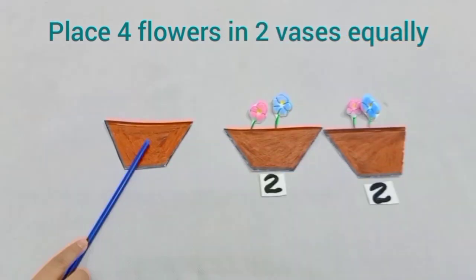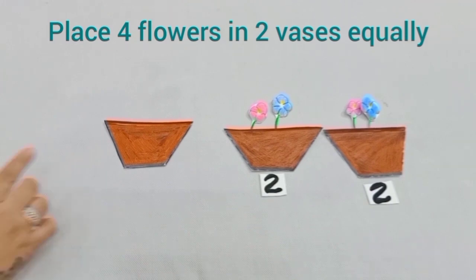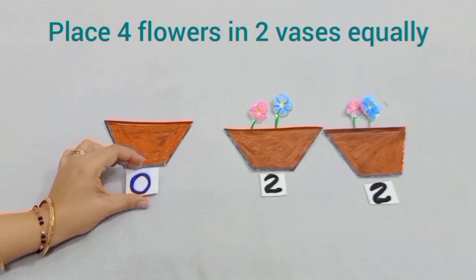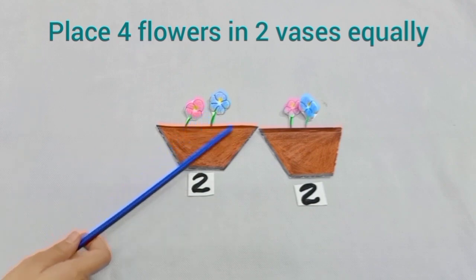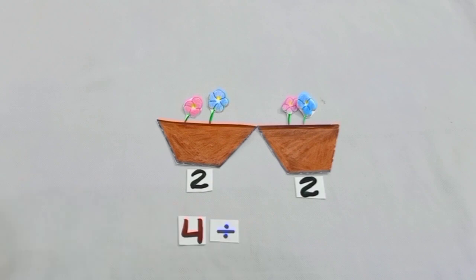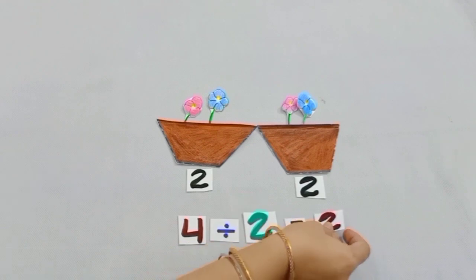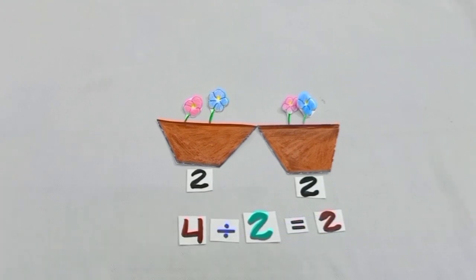So, dear students, we have placed 4 flowers equally in the 2 vases. Can you see any flower remaining? No, and no means 0. We have divided equally 4 flowers in these 2 vases. When 4 flowers were placed equally in 2 vases, each vase got 2 flowers. Here is the result: 4 divided by 2 is equal to 2.